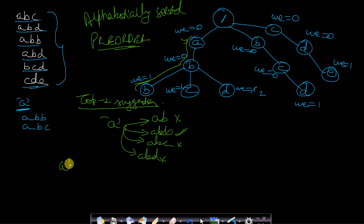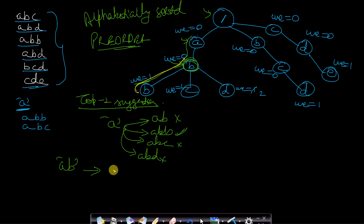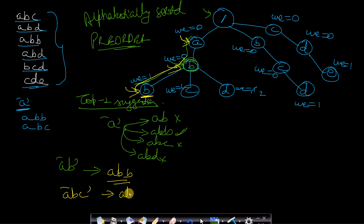If we type 'AB', we traverse from root to A then to B, arriving at node B. From there we do a pre-order traversal and reach the child B with word-end greater than 0, so the suggestion is ABB. If we type 'ABC', we traverse to node C, which already has word-end value 1 and no child nodes — so the suggestion is still ABC itself. The word-end value confirms the word exists and there are no further extensions.